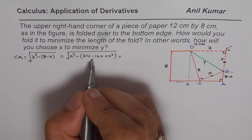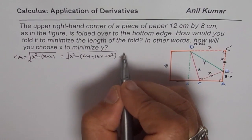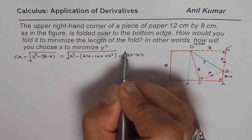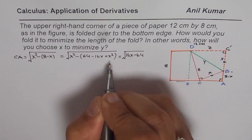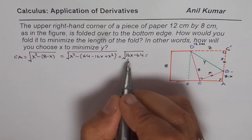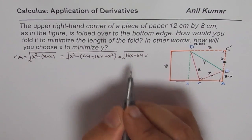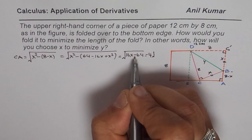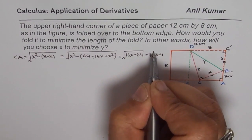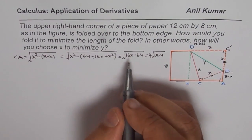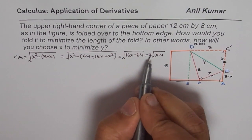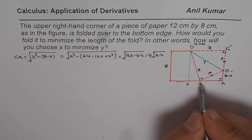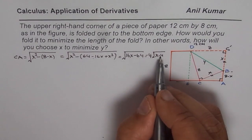So once you have 16X minus 64 under the square root, we can factor 16. The square root of 16 is 4, so 4 comes outside and we get X minus 4 in the bracket. So CA equals 4 times the square root of (X minus 4).